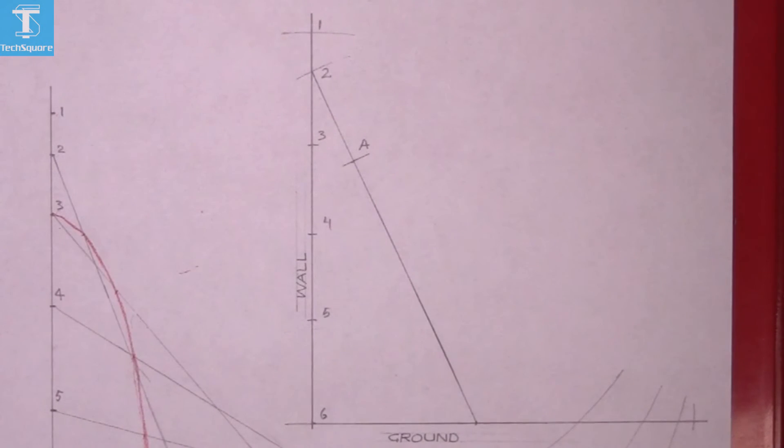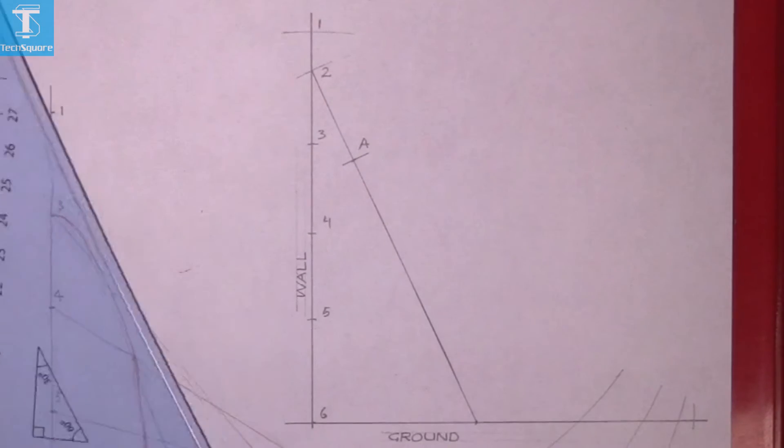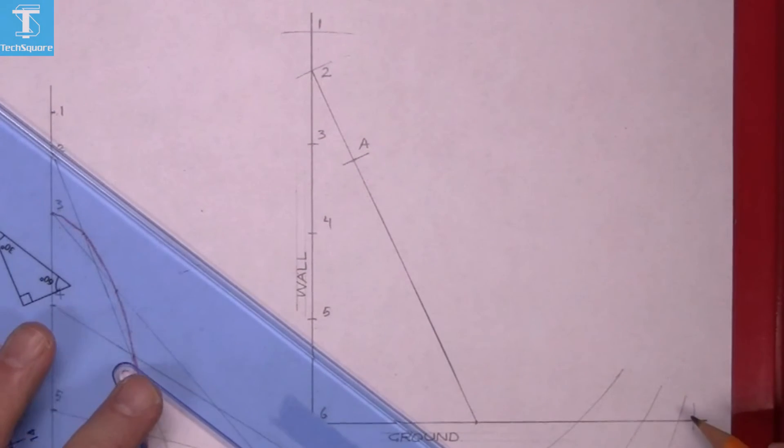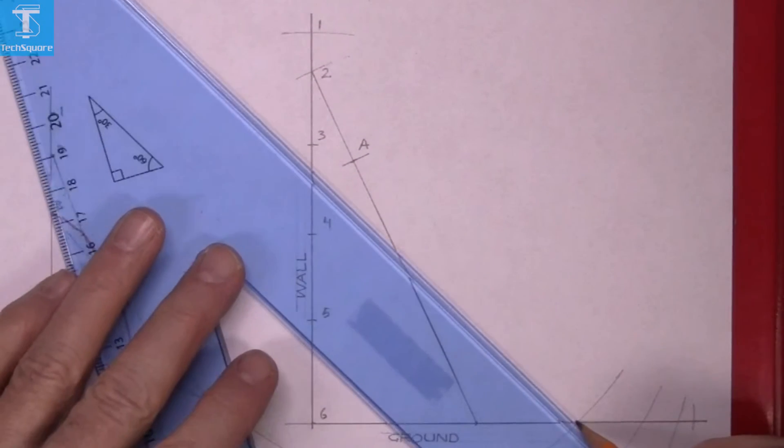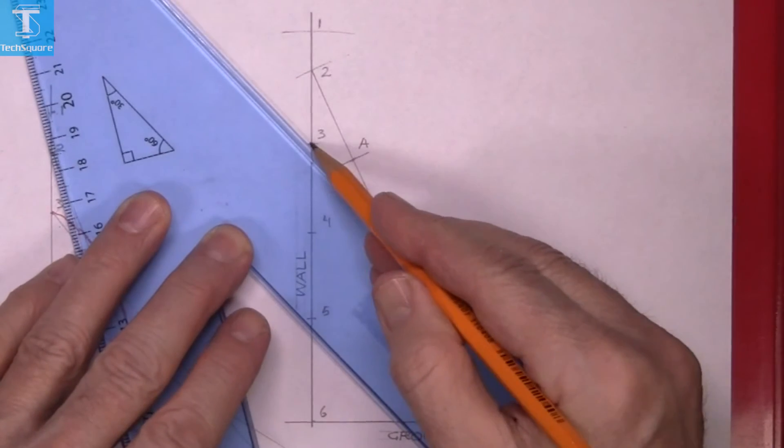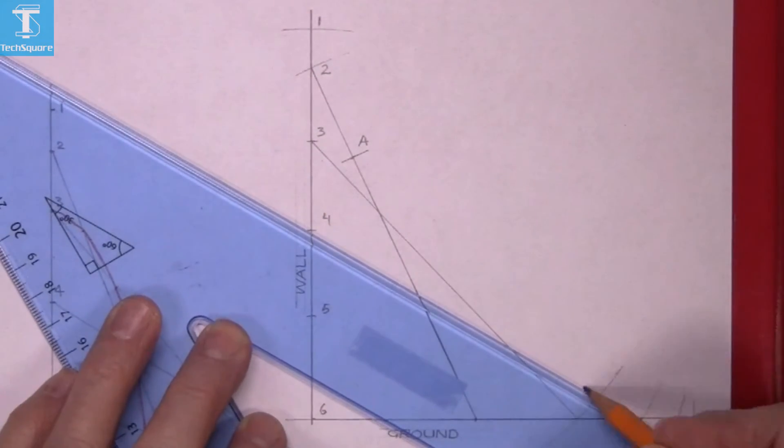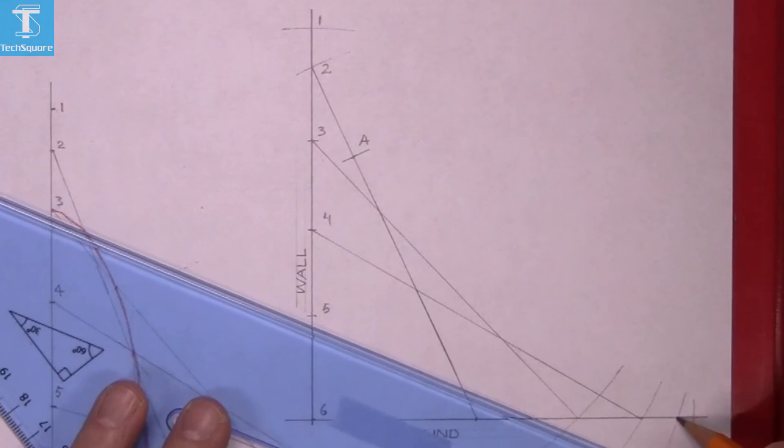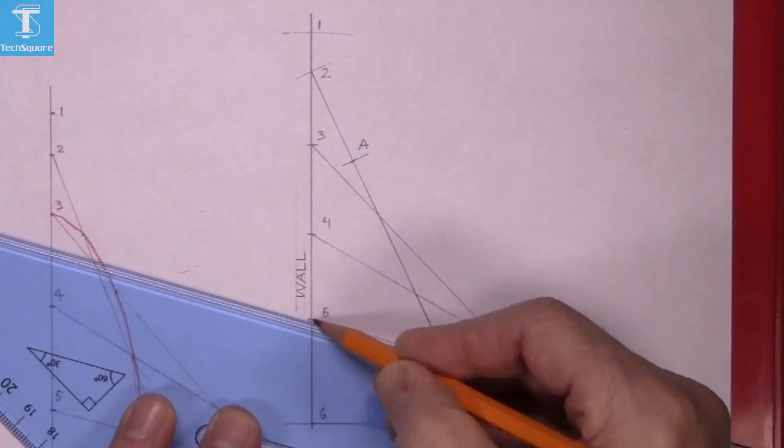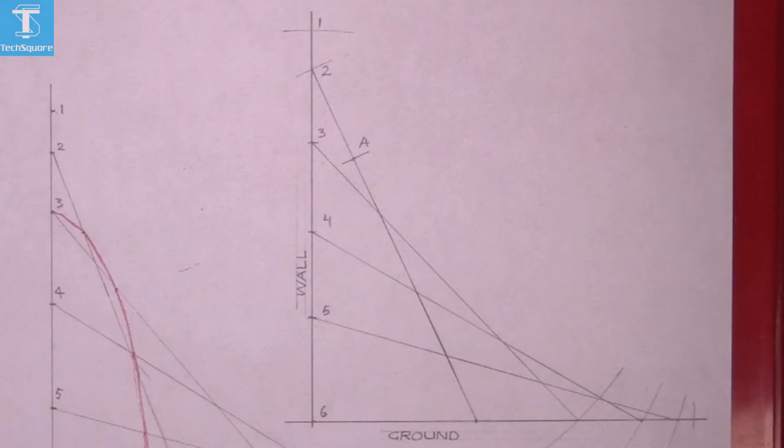Now join that bottom point to the corresponding point on the wall. So point three to the first one, point four to the next one, and so on until you get all the lines in position. That's where the ladder would be as it falls.